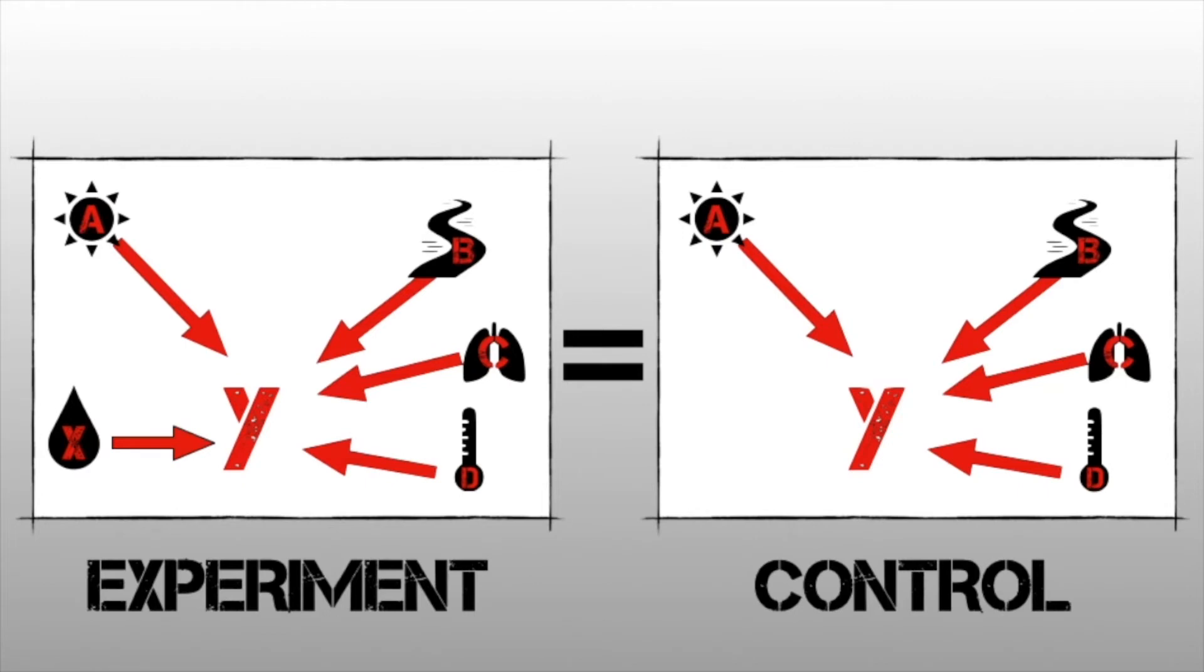Which means that any change that we see in y, any difference that we observe between the experiment and the control, can only be due to our independent variable, which is the fertilizer. So we let the experiment run, and we see that actually there is a very marked difference between the growth of the plants in the experiment compared to the control. And we have ensured validity because we have fixed all the other variables.